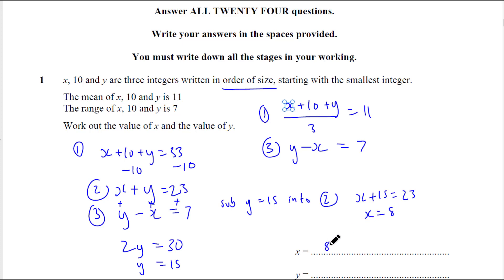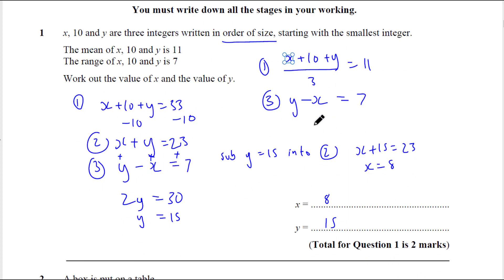So I think that's the answer: 8 and 15. Let's check: 8 plus 15 is 23, add 10, 33 divided by 3 is 11. That's got to be the answer.